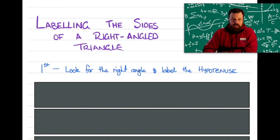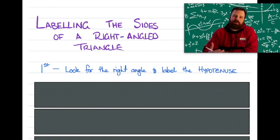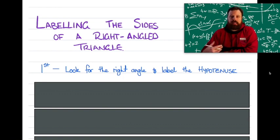The first thing we need to do is look for the right angle and label the hypotenuse. The trigonometry that we're doing in Year 9 and 10 only deals with right-angle triangles, much the same as Pythagoras. So if the triangle doesn't contain a right angle, we can't apply trigonometry to it. So we need to look for that right angle, and then we need to label the hypotenuse accordingly.